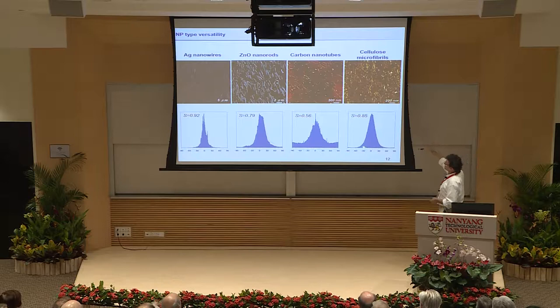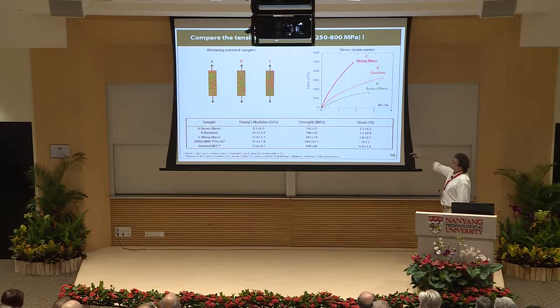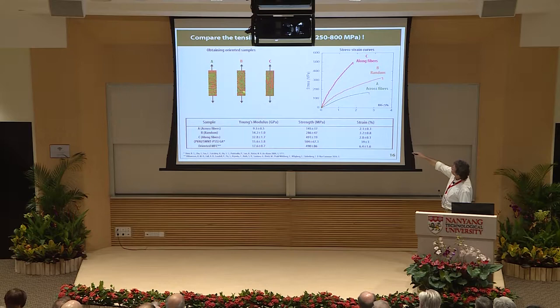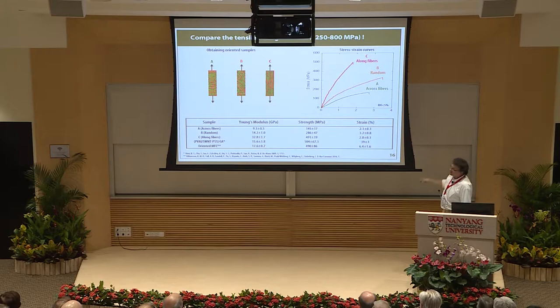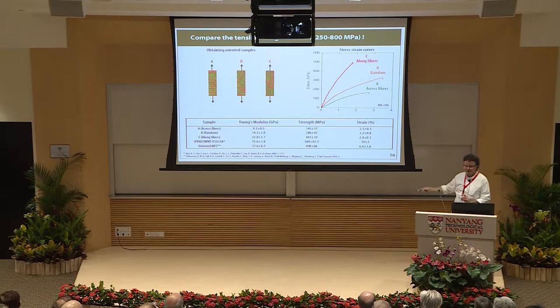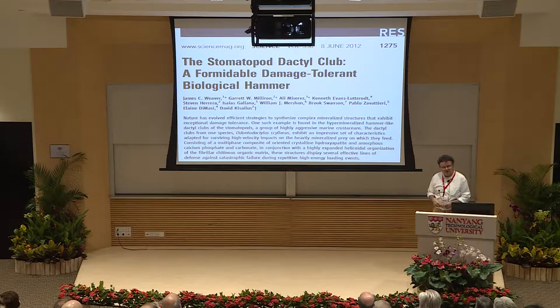Looking at the order parameter: if we pull perpendicular to the fiber direction we get 200 MPa; pulling on the random film gives roughly up to 300 MPa; pulling parallel to the fiber direction we are now at 500 MPa. This is not yet published, but it beats Nik Kotov's 400 MPa. This is a biodegradable material available on large surfaces, applicable to many things.